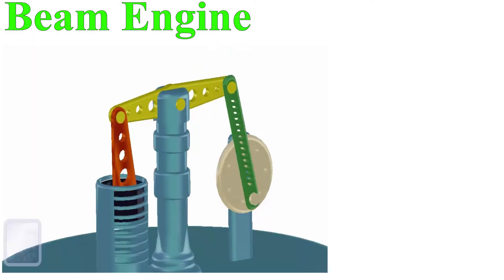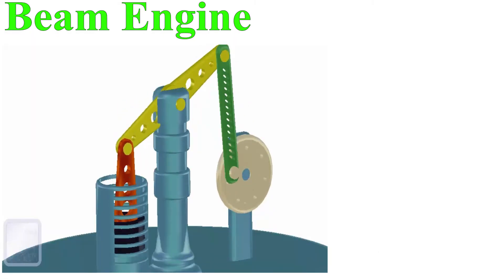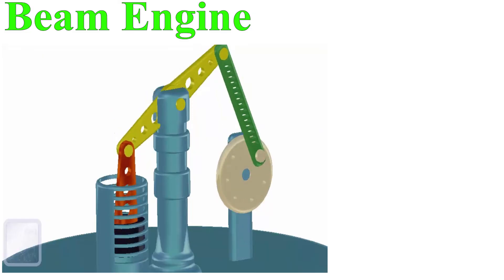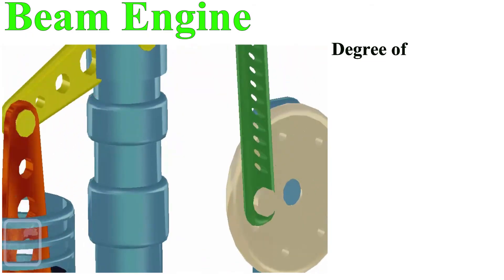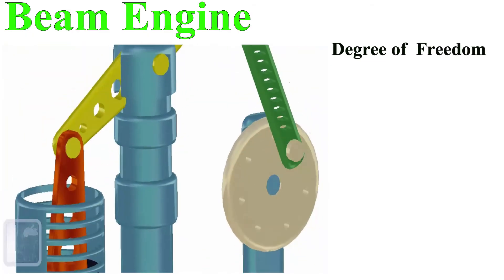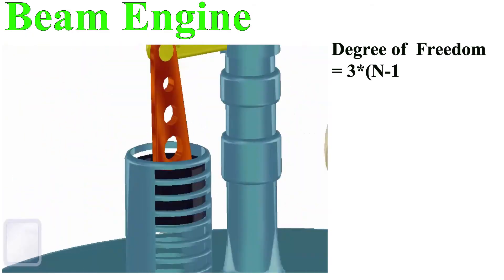Degree of freedom of the mechanism: Number of links are 6. Number of joints are 7. Degree of freedom is 3(n-1) - 2j, where n is the number of links and j is the number of joints.